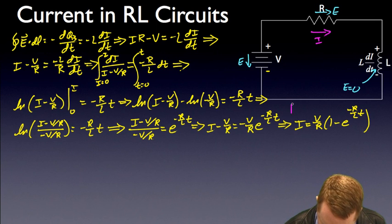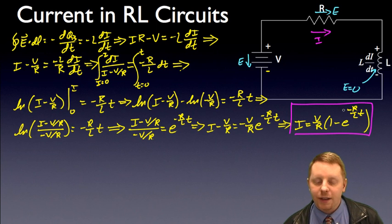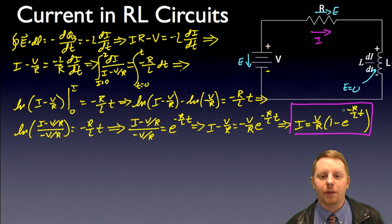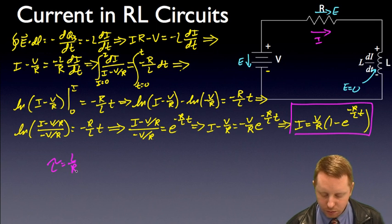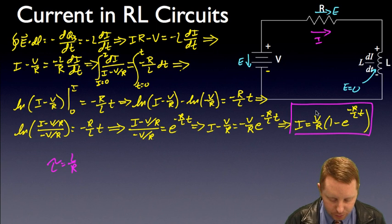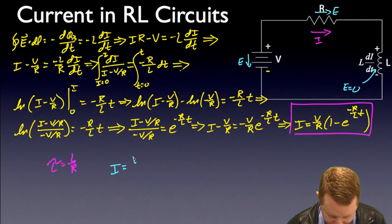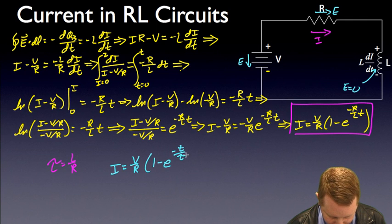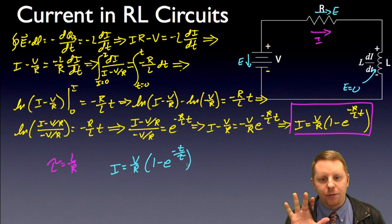That form should look fairly familiar — we've got a constant times (1 minus e to the negative t over tau), our time constant, very similar to when we were looking at RC circuits, where now tau is equal to L over R. So we could also write that equation as I equals V/R times (1 minus e to the negative t over tau), where once again you achieve 99% of the final value after about 5 tau.